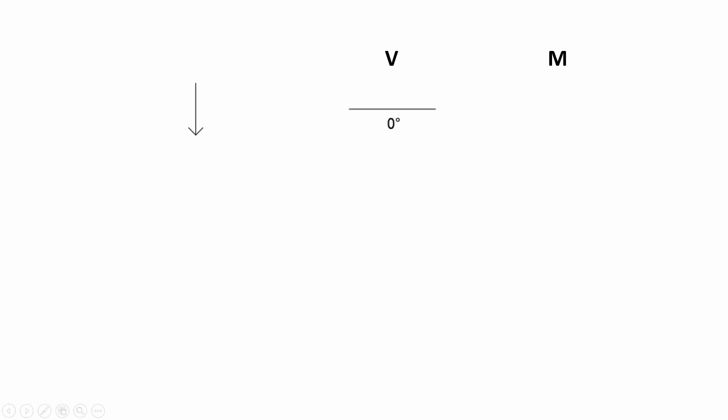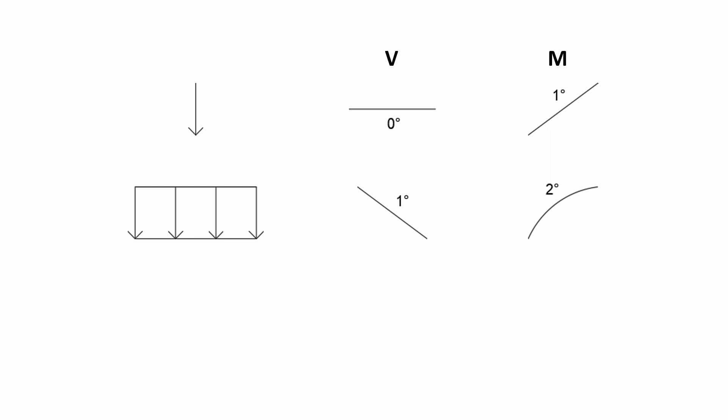To sum up: a concentrated load will have a zero-degree shear diagram and a first-degree moment diagram. A uniform load will have a first-degree shear diagram and a second-degree moment diagram. A uniformly varying load will have a second-degree shear diagram and a third-degree moment diagram. That's it for the shear and moment diagram.